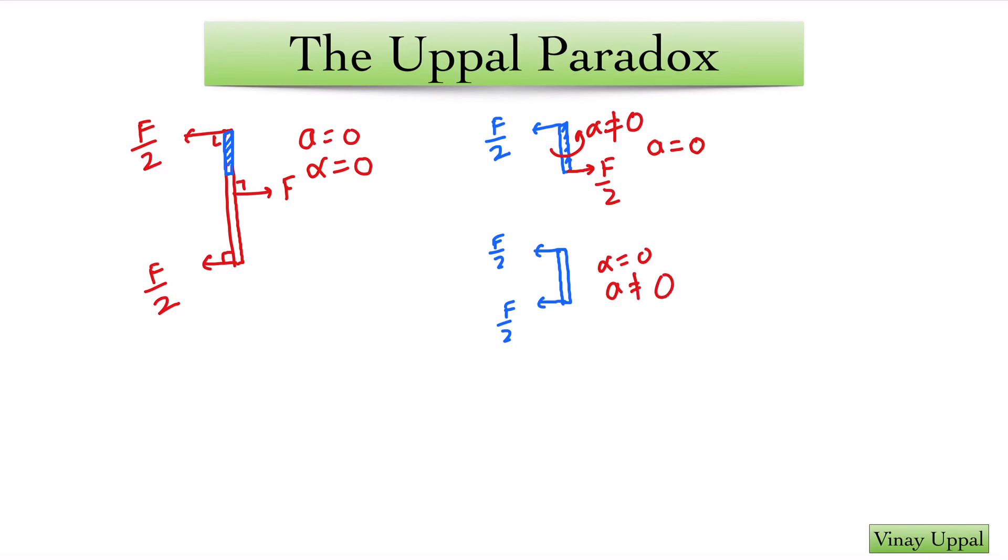So obviously something is going wrong. So my question is which one of this is the correct solution or perhaps neither of this is the correct picture, then how would we resolve this paradox?